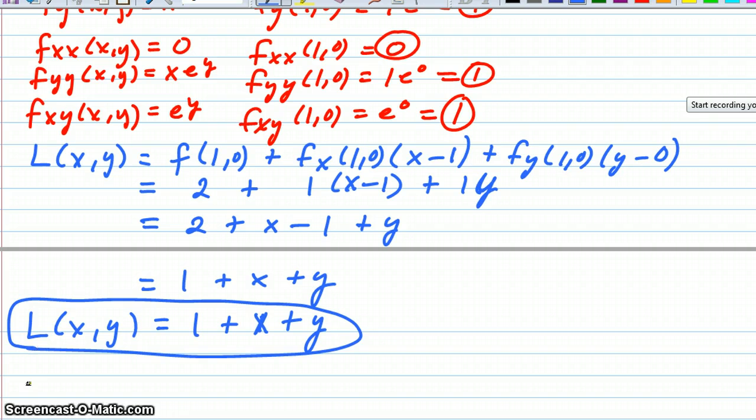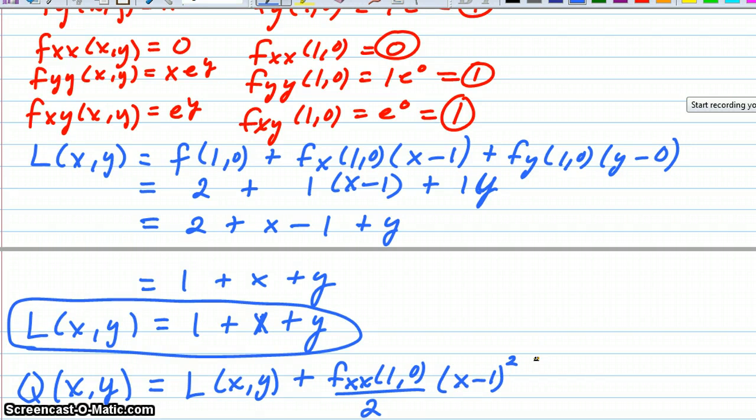Next we're ready to approximate the second degree Taylor polynomial, the quadratic approximation of our function. So we start with just L(x,y). That will be our first couple terms, rather than having to rewrite those, plus f sub xx at (1,0) over 2 times (x minus 1) squared, plus f sub xy at (1,0), we don't put over 2 because there's 2 of them, the xy and the yx are the same, times (x minus 1) times (y minus 0).